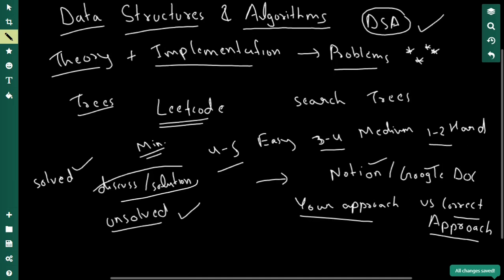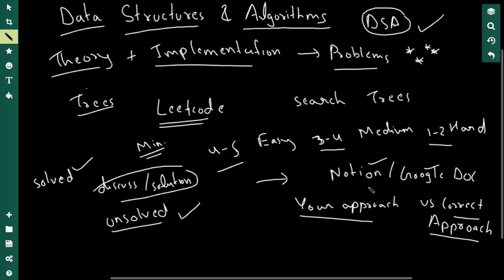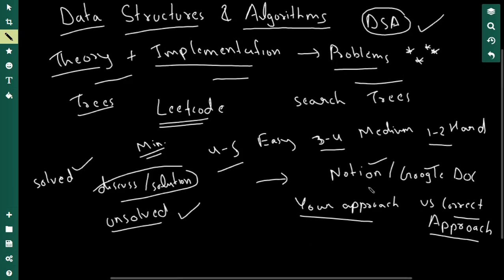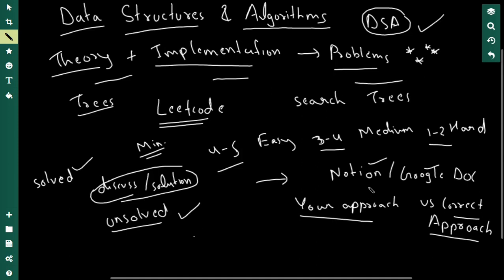That's basically it. You've learned a programming language, you have a list of DSA, and for each one you've learned the theory, done the implementation, and solved the problems. It's not easy to be a master of DSA — it is difficult. But if you give it daily dedication and hard work, you'll become a master of DSA before you know it. As they say, practice makes a man perfect, and here that couldn't be more true. Practice problems, understand concepts, and before you know it, you'll be a master of DSA.